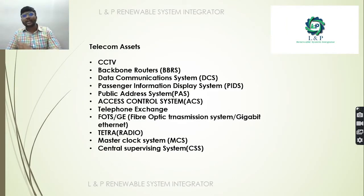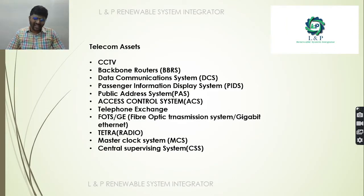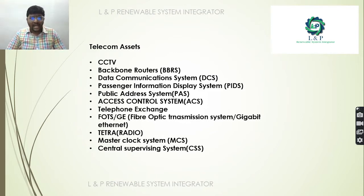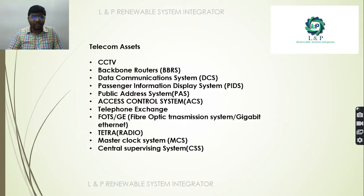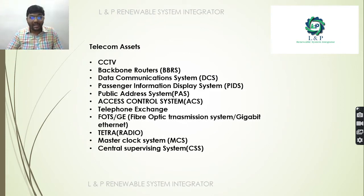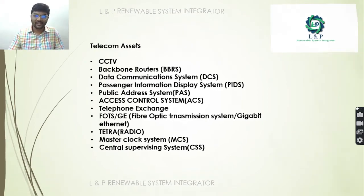The telecom assets present in a metro station include: CCTV, BBRS (backbone routers), data communication system, passenger information display system, public address system, building automation system, access control system, telephone exchange, TETRA radios, master clock systems, and central supervision systems.